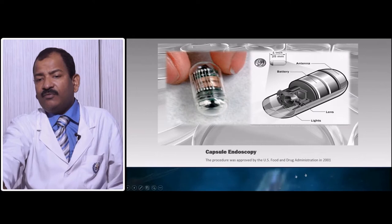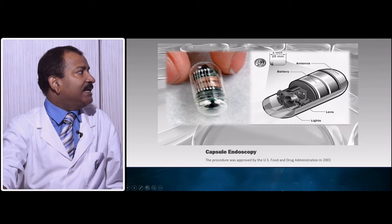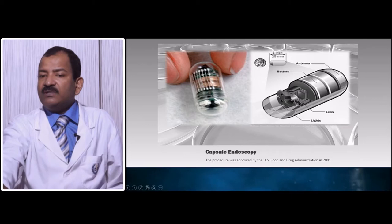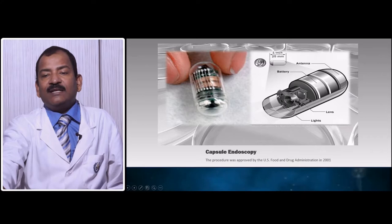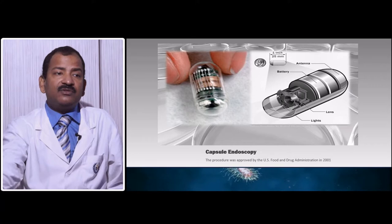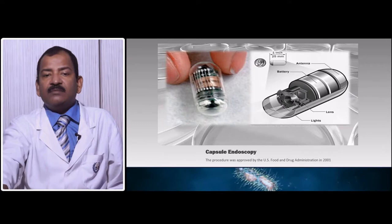The capsule endoscope has a lens that projects the image to a CCD (charge-coupled device), LED lights on the periphery, two batteries, and one antenna. Once dropped inside, the light switches on, the image goes to the lens, the lens focuses the image to the CCD, and via Bluetooth or wireless technology the image is sent outside or memorized. Once the patient passes the capsule in the fecal matter, you can retrieve and examine it.